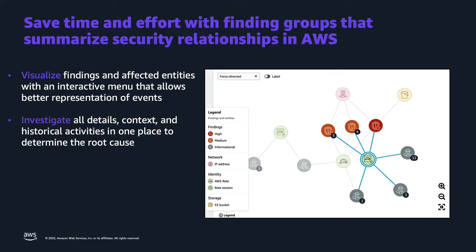Amazon Detective Finding Groups contains a dynamic visual representation of the behavior graph to emphasize the relationships between security findings and the associated entities within a finding group. This feature makes it easier to triage potential security issues with at-a-glance visuals that include finding types, severity levels, associated accounts, and linkages with the Detective behavioral graph that can be used to investigate related activity within a finding group.